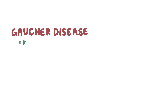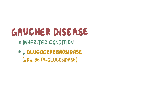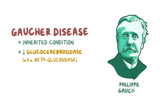Gaucher disease is an inherited condition characterized by insufficient levels of the enzyme glucocerebrosidase, also called beta-glucosidase. It's named for the French physician Philippe Gaucher who first described the condition.